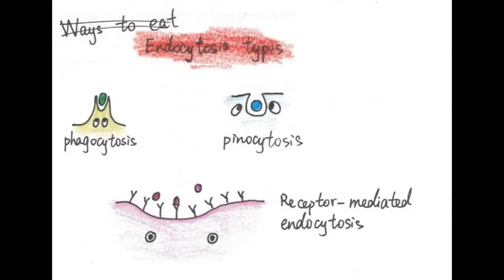There are three types of endocytosis. First, receptor-mediated endocytosis, which moves very specific kinds of particles into the cell. Phagocytosis is the process by which a cell engulfs and digests solids. Pinocytosis is the process by which a cell engulfs droplets of fluid from its surroundings.